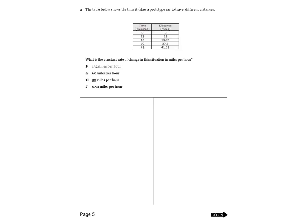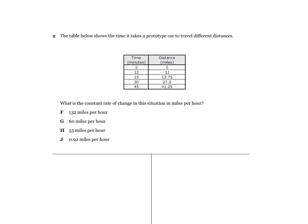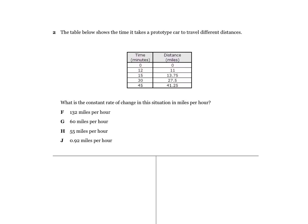Number two says the table below shows the time it takes a prototype car to travel different distances. What is the constant rate of change in this situation? We're going to highlight constant rate of change in miles per hour, and then we're going to highlight minutes and distance in miles. We wrote a WKU for it.